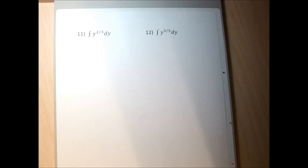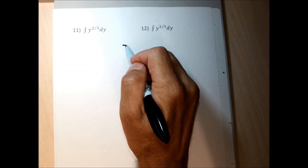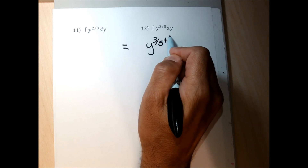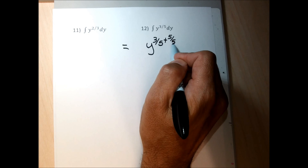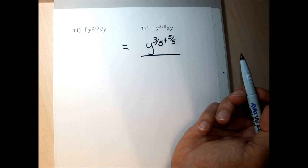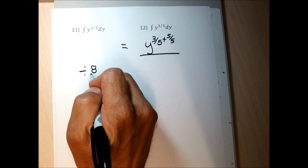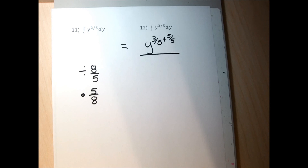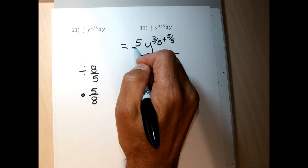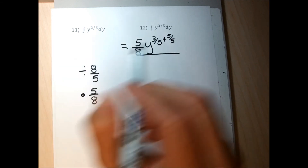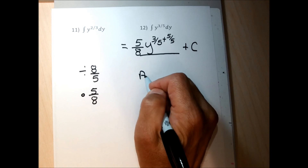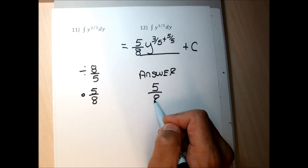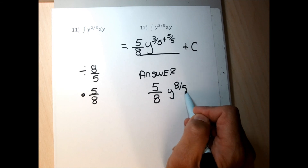Problem 12 has a fraction exponent without a radical. I add 1 to the old exponent, writing 1 as 5/5, so 3/5 plus 5/5 is 8/5. I divide by the new exponent 8/5, which is the same as multiplying by 5/8. So the answer is 5/8 y to the 8/5 plus C.